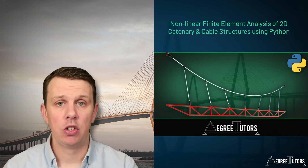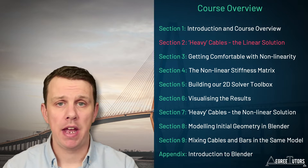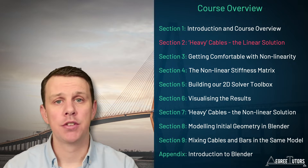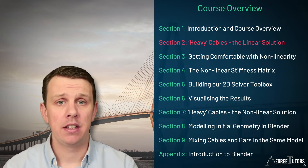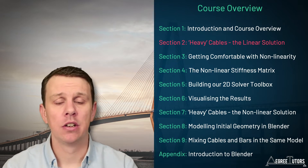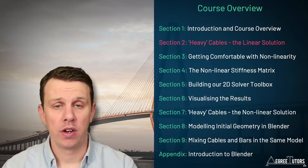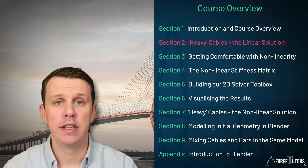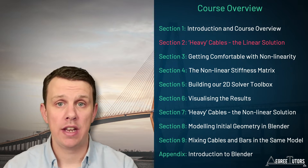Let's have a look at the various different sections of the course. In section two we're going to start our analysis of cable behavior. We focus on cables because they're the classic example of a structure that undergoes geometric non-linearity — fundamentally they change shape when we apply loads to them. We'll begin by deriving a linear solution for cable behavior — an equation that describes the shape of the cable while ignoring all non-linear effects. This will act as a really helpful baseline that we can compare our non-linear code against later in the course.